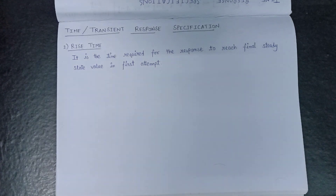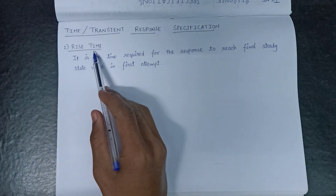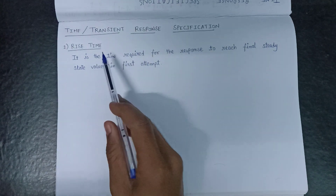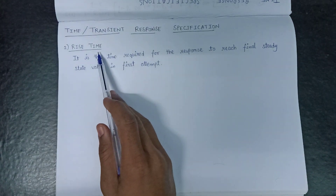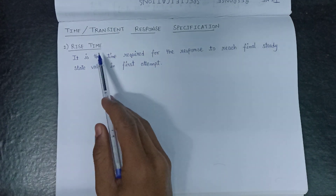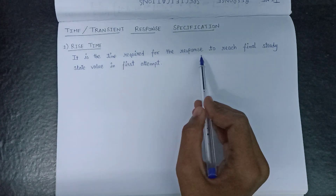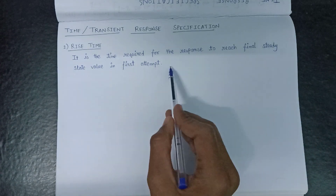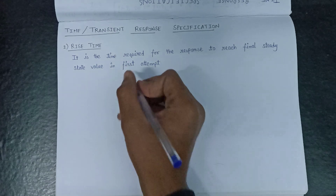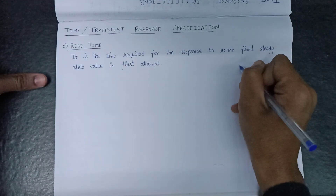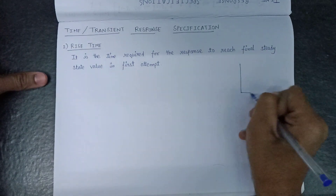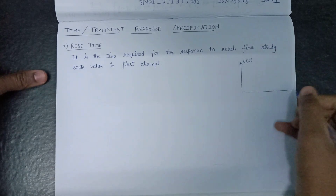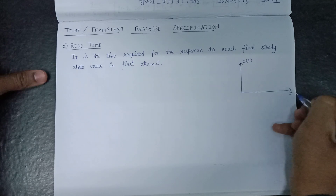Welcome all. In this lecture, we are going to discuss about the second transient response specification that is denoted as rise time. So what does it mean? Rise time is defined as the time required for the response to reach the final steady state value in the first attempt. Let us discuss it by the time response characteristic graph, where c is plotted against t.